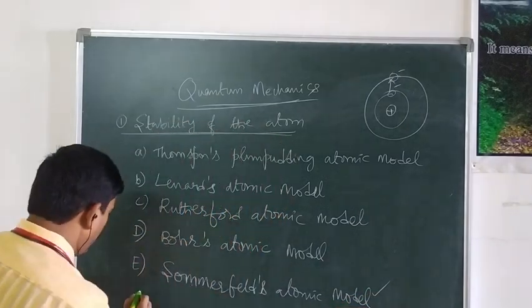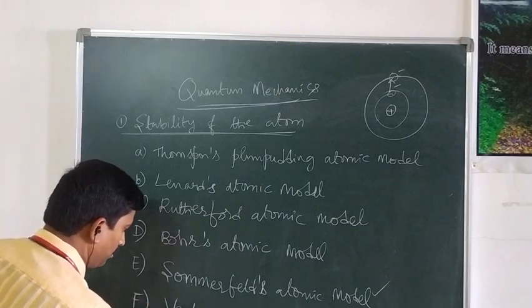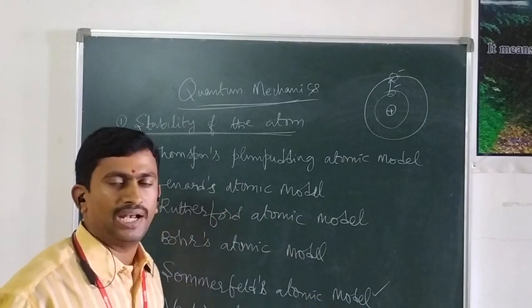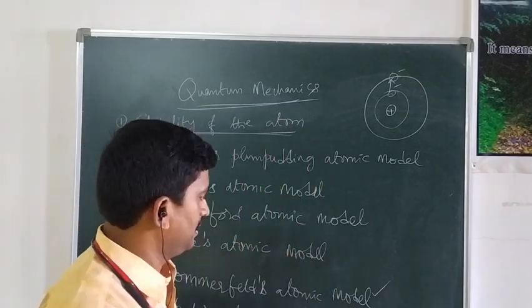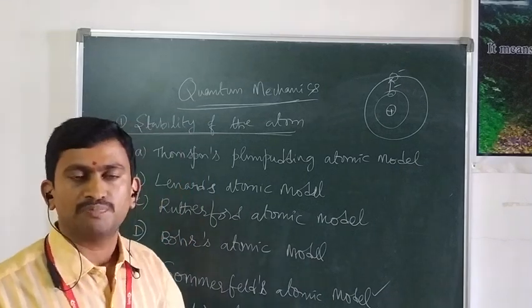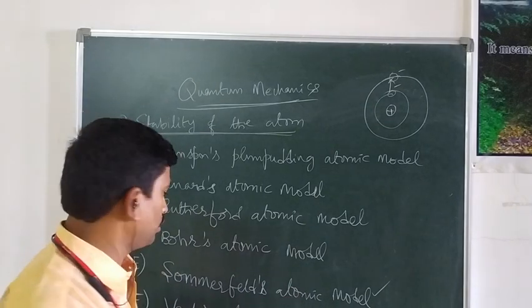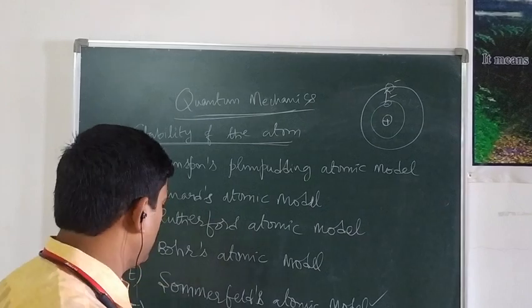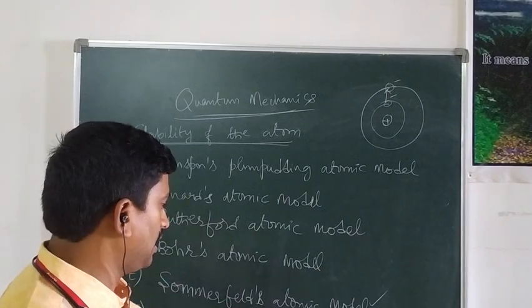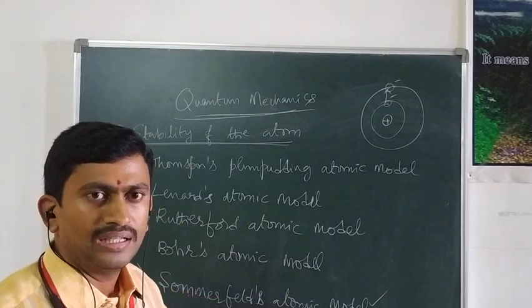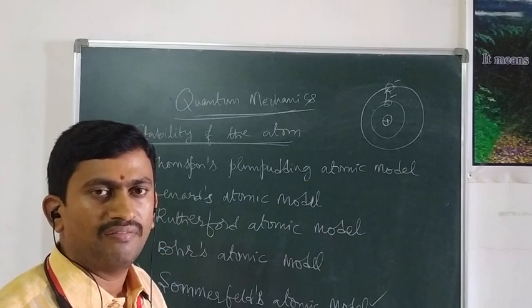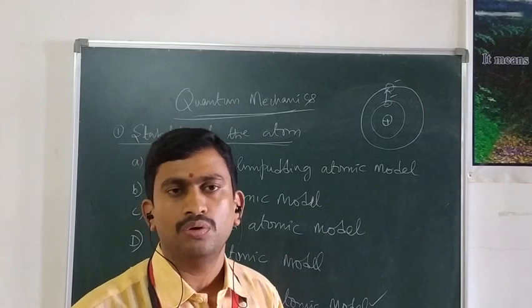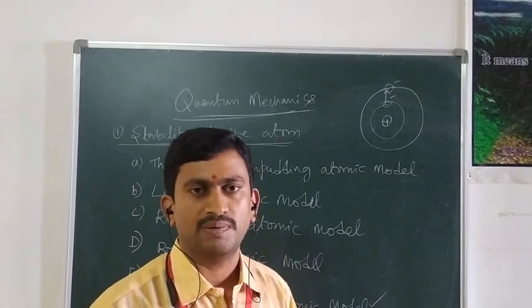Now, coming to the last but not least — the Vector-Atom model. This is the only model which can successfully explain the structure as well as stability of all the elements existing in the periodic table. This model was put forward by a group of scientists, including Sommerfeld and his students — Uhlenbeck, Goudsmit, and others — who were all involved in this particular Vector-Atom model. Apart from all the postulates of Sommerfeld, space quantization is involved in this Vector-Atom model. This is regarding the stability of the atom. In the next video, I would like to explain how the photoelectric effect was explained by quantum mechanics. Thank you.